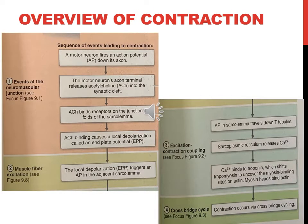This overview of contraction in your book gives you a general sequence with four parts. We're going to go into the details of each part, but this is a really good reference. We're going to start at the neuromuscular junction and walk through all of these pieces. There's a lot here, so start and stop as needed and refer to your book — everything is written out there too.